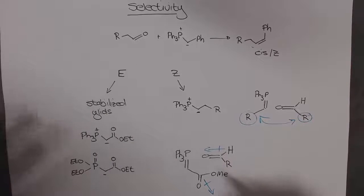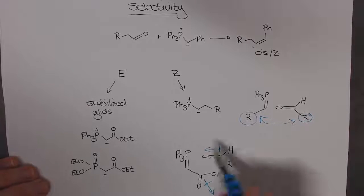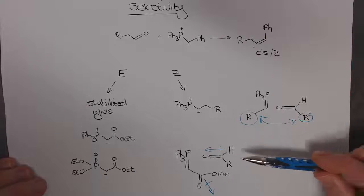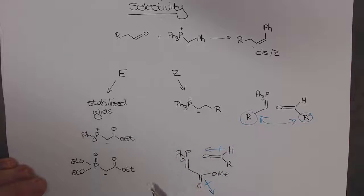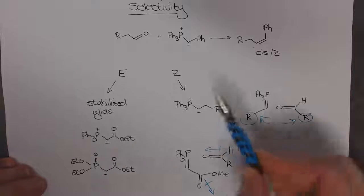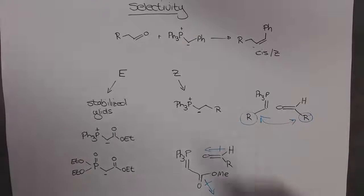This is what's thought to control now the selectivity and why we get E-selective. So as this approaches, it's going to twist around, and then the R group is going to be on the opposite side of the ester, and that's why we would get the trans or E-selectivity in this reaction.